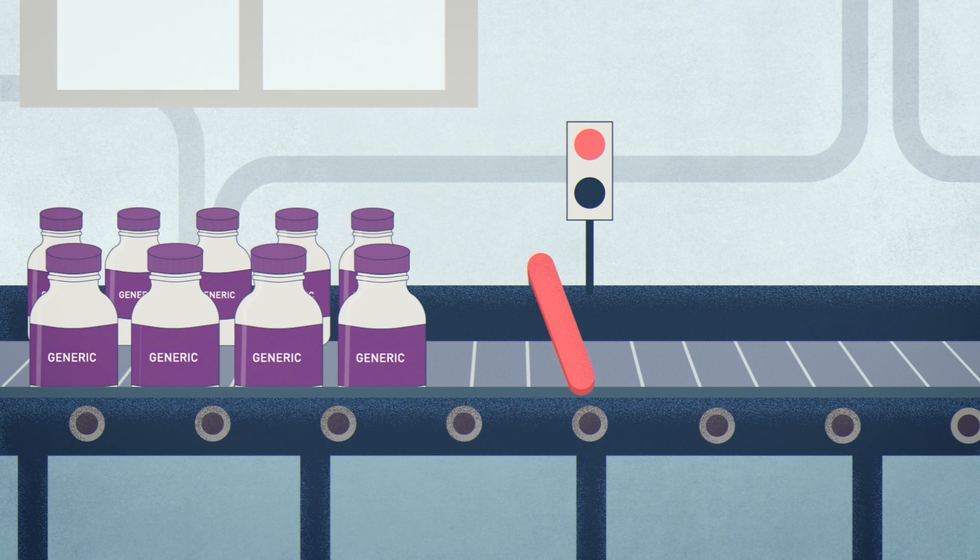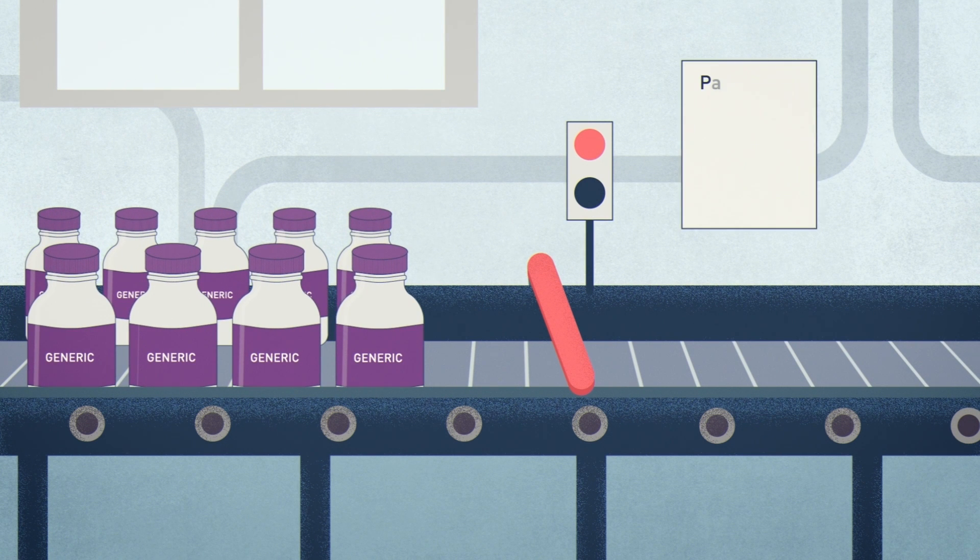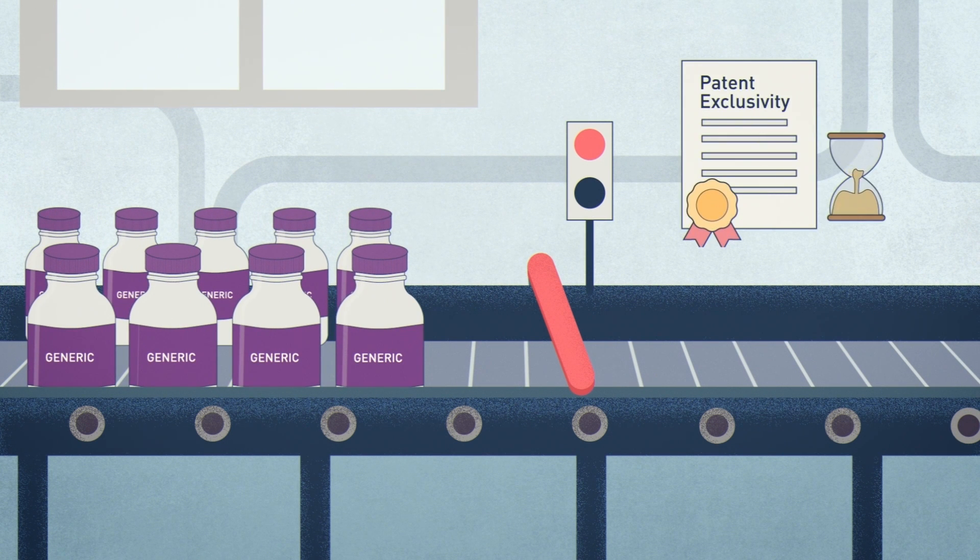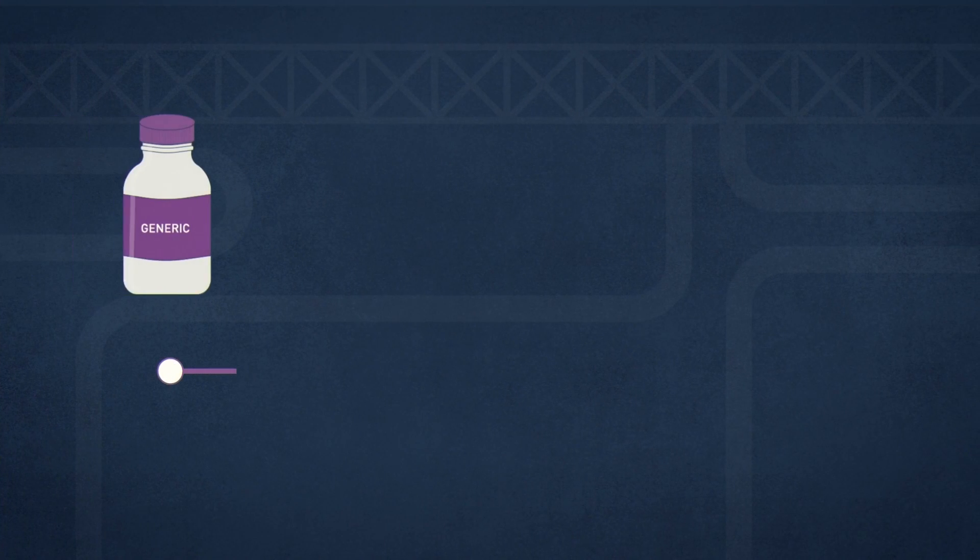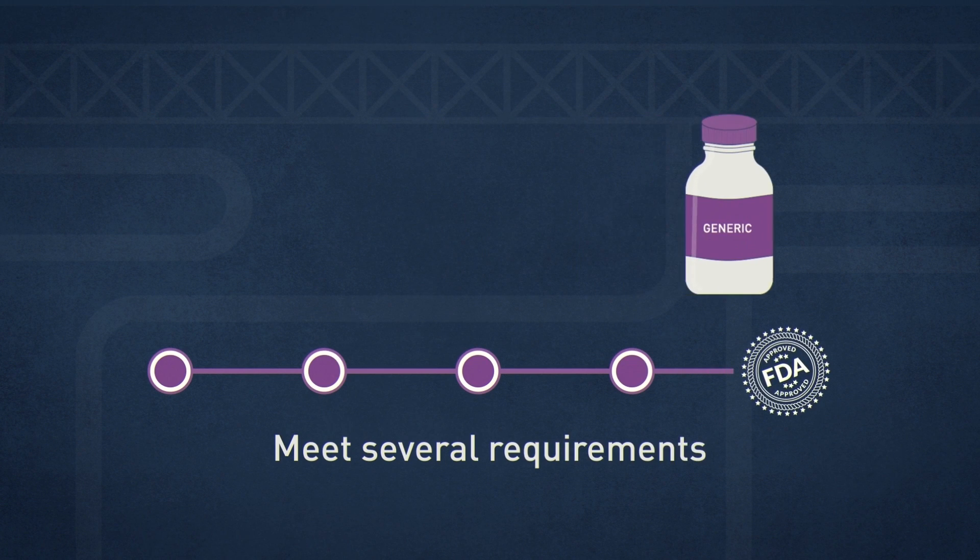Manufacturers can develop a generic drug only after patent exclusivity for the original brand-name drug expires. To get FDA approval, manufacturers must meet several requirements.